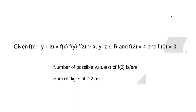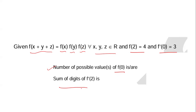Hello guys, in this video we are going to solve this problem. In this problem it is given that f(x+y+z) = f(x)·f(y)·f(z) where x, y and z belong to the real numbers, and f(2) = 4 and f'(0) = 3. We have to find the number of possible values of f(0) and the sum of digits of f'(2).